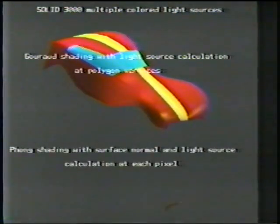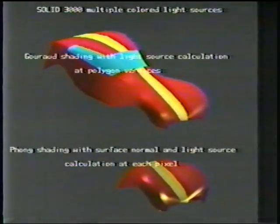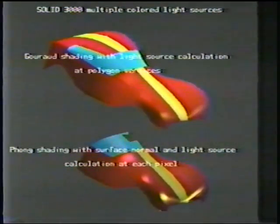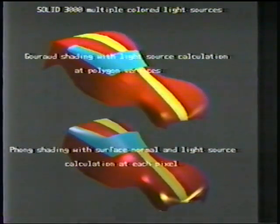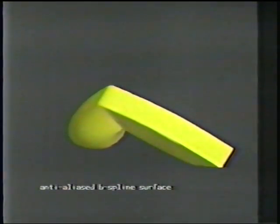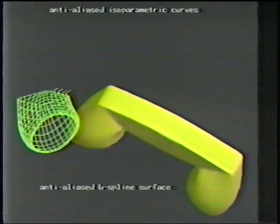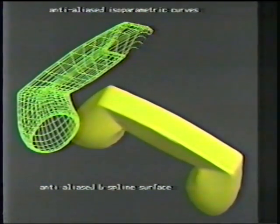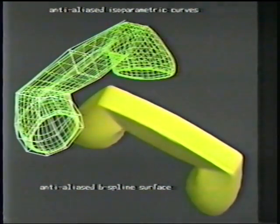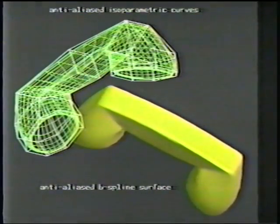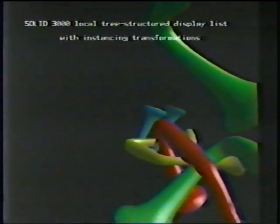We provide Gouraud shading functions, where we smoothly interpolate the color across the surfaces of the polygons, and we have true Phong shading. All calculation of the normals and light source calculations are done locally in the ADIUS 3000 with no need to go back to the host computer for this data. We also provide the ability to display anti-aliased polygons and lines, including the polygon subdivision version in anti-alias form as well as a hidden surface standard.